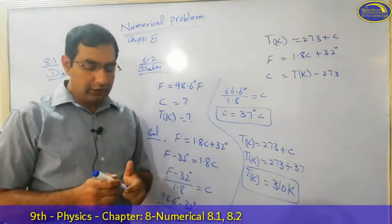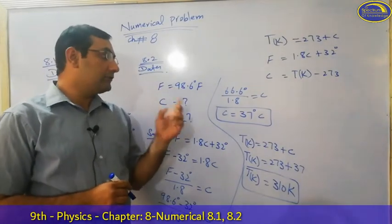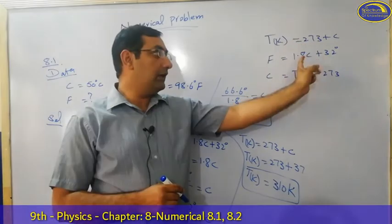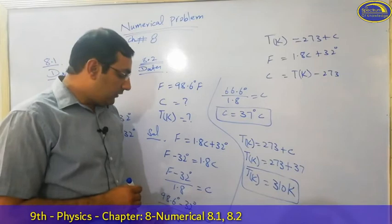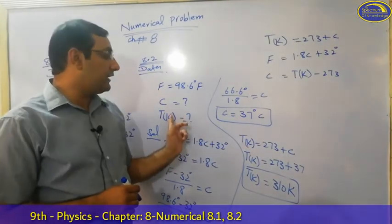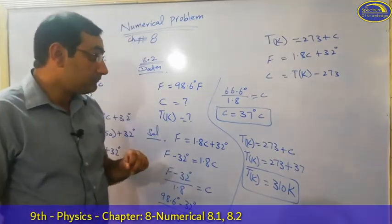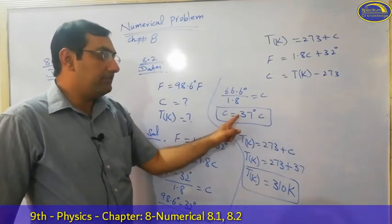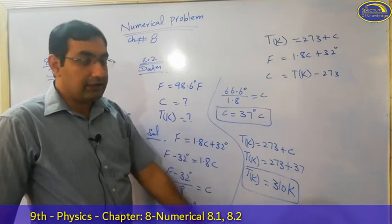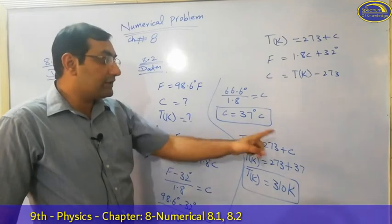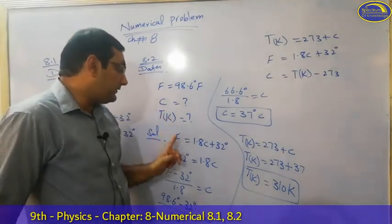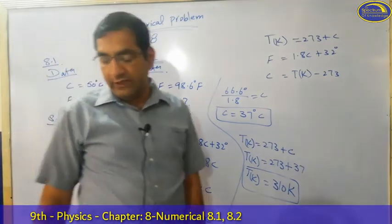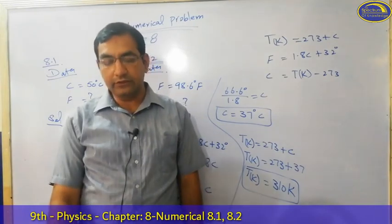The body temperature is 98.6 Fahrenheit, which in Celsius and Kelvin: Celsius and Fahrenheit which I have explained. For Kelvin to convert we have the relationship between Kelvin and Celsius. Celsius we can calculate. It is a good thing and most importantly, it is the relation of Kelvin. Hopefully you will understand. This was your numerical 8.1 and 8.2. Thank you.